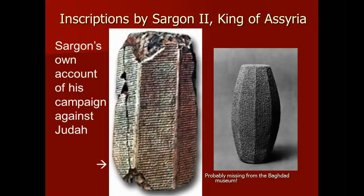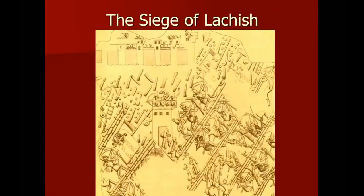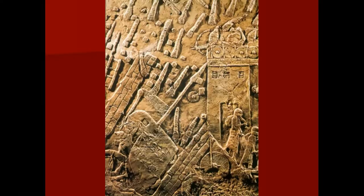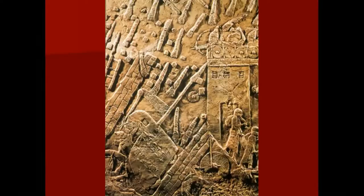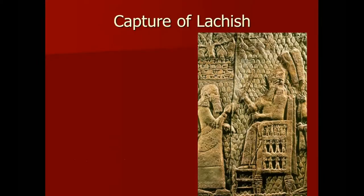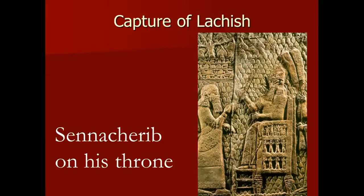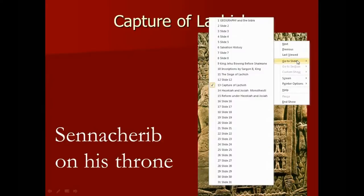We have inscriptions by Sargon II, king of Assyria. There are also reliefs of the siege of Lachish, one of the cities the Assyrians took when they besieged Judah, and what the Moabite Stone looks like — there's a replica you can see in the Jerusalem museum. What we see in this period is that both kingdoms withheld tribute from Assyria. When we talk about the prophets who lived in this period, we'll discuss more of the significance of these events.